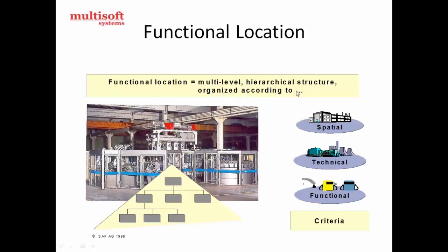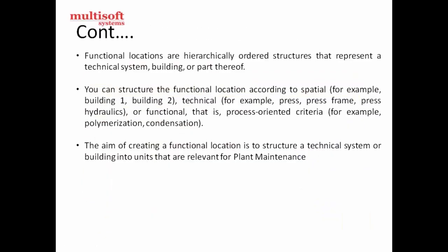Functional locations have a multilevel hierarchical structure, and organizations are organized according to this structure — spatial, technical, and functional. Functional locations are hierarchical order structures that represent technical systems, buildings, or parts thereof. The technical aspect relates to machinery and equipment installed at the functional location, such as press machines, press hydraulics, DG sets, freezers, and other equipment installed at the functional location.